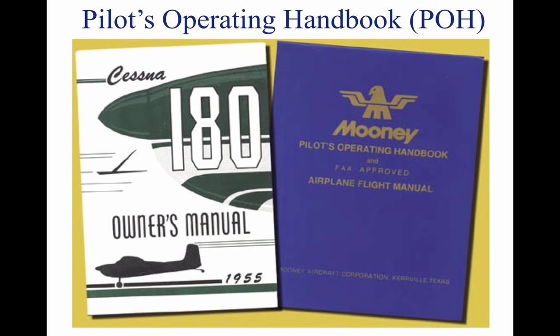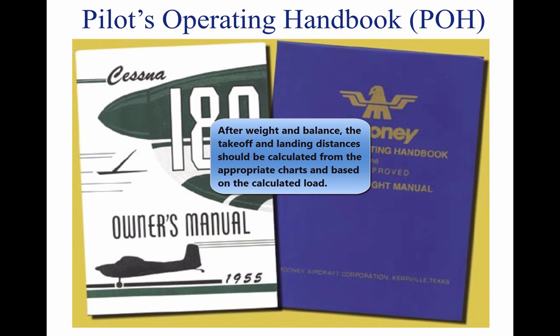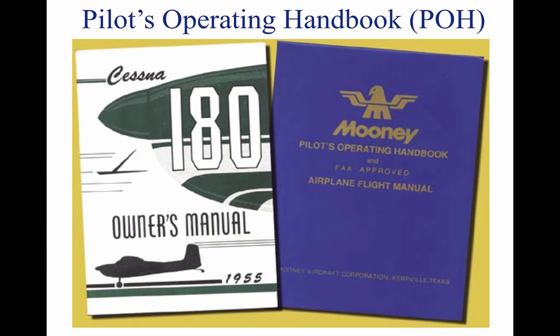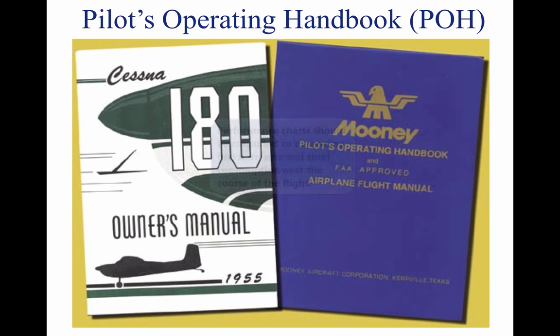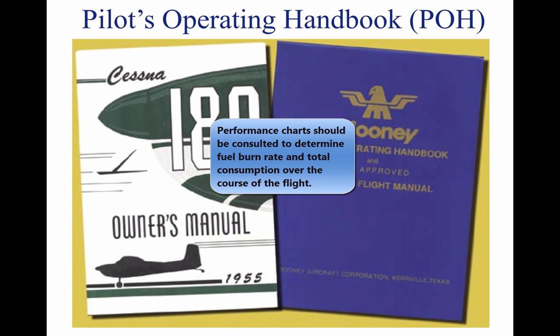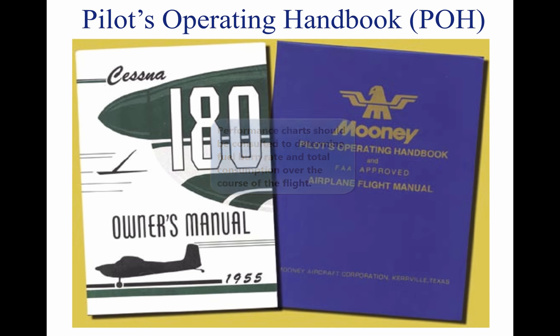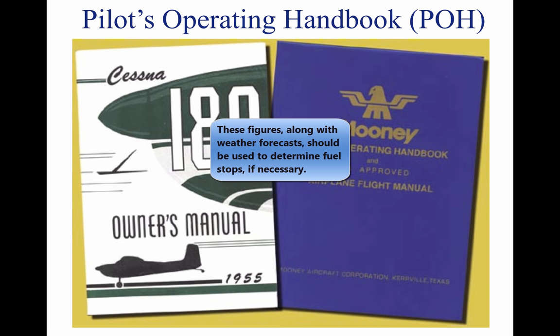Be sure to use the latest weight and balance information in the FAA-approved AFM or other permanent aircraft records to obtain empty weight and empty weight CG information. Determine the takeoff and landing distances from the appropriate charts, based on the calculated load, elevation of the airport, and temperature. Then compare these distances with the amount of runway available. Remember, the heavier the load and the higher the elevation, temperature, or humidity, the longer the takeoff and landing roll, and the lower the rate of climb. Check the fuel consumption charts to determine the rate of fuel consumption at the estimated flight altitude and power settings, then compare it with the estimated time for the flight so that refueling points along the route can be included in the plan.